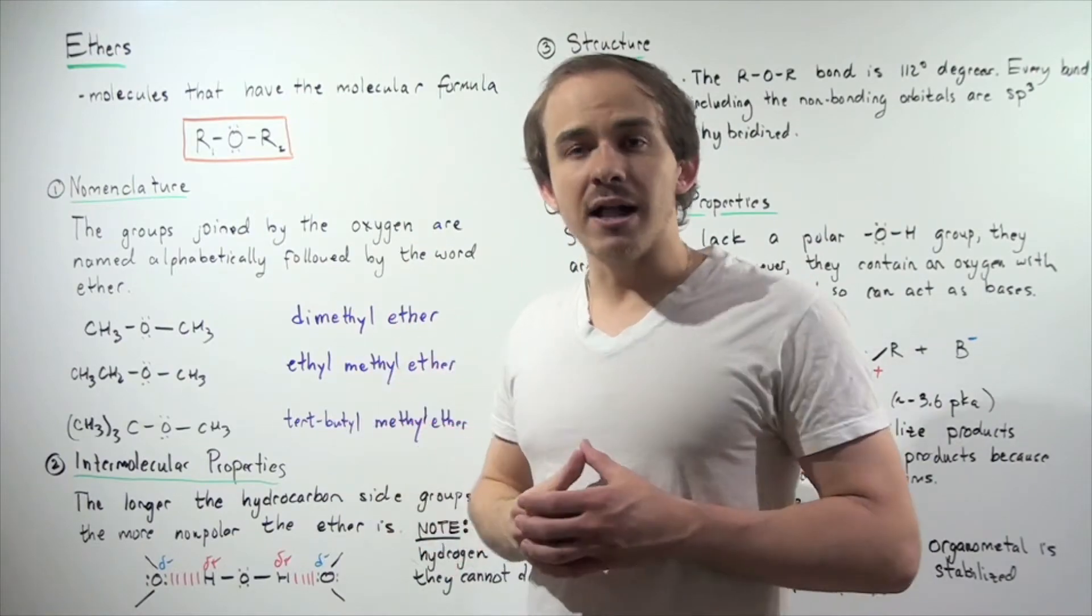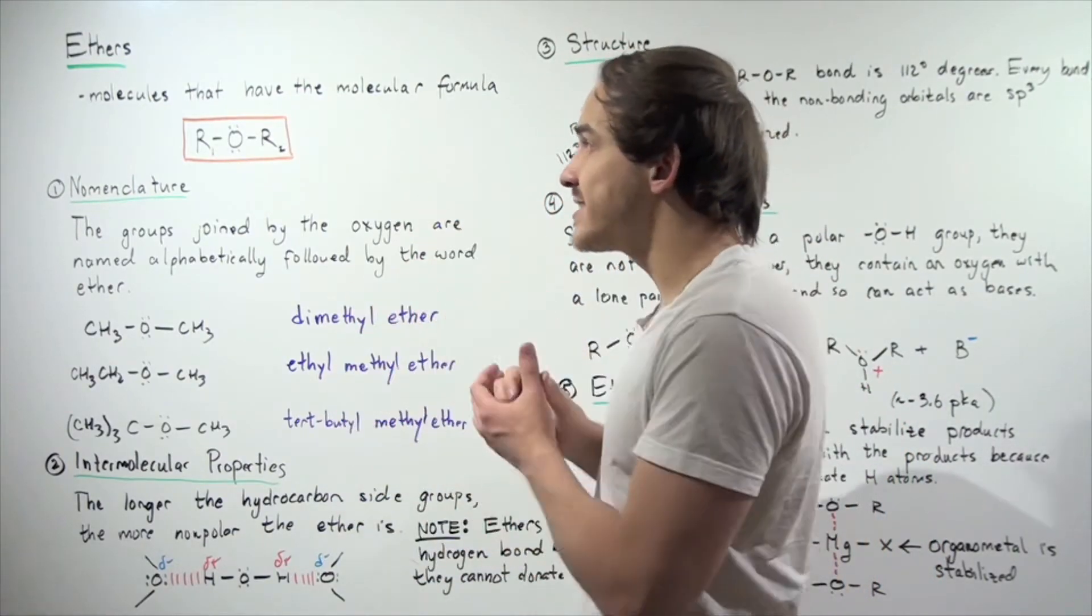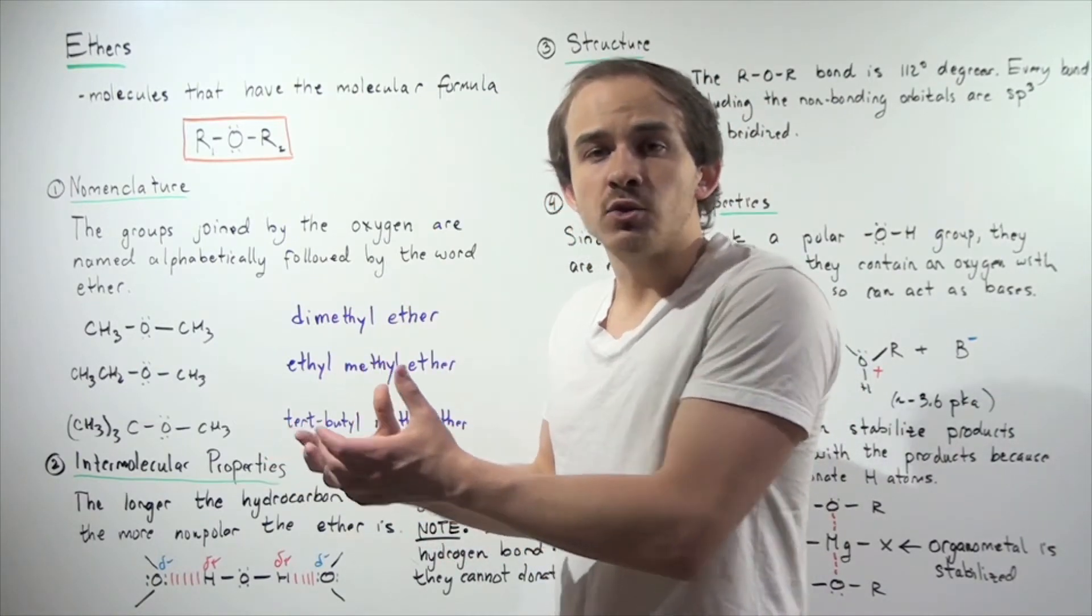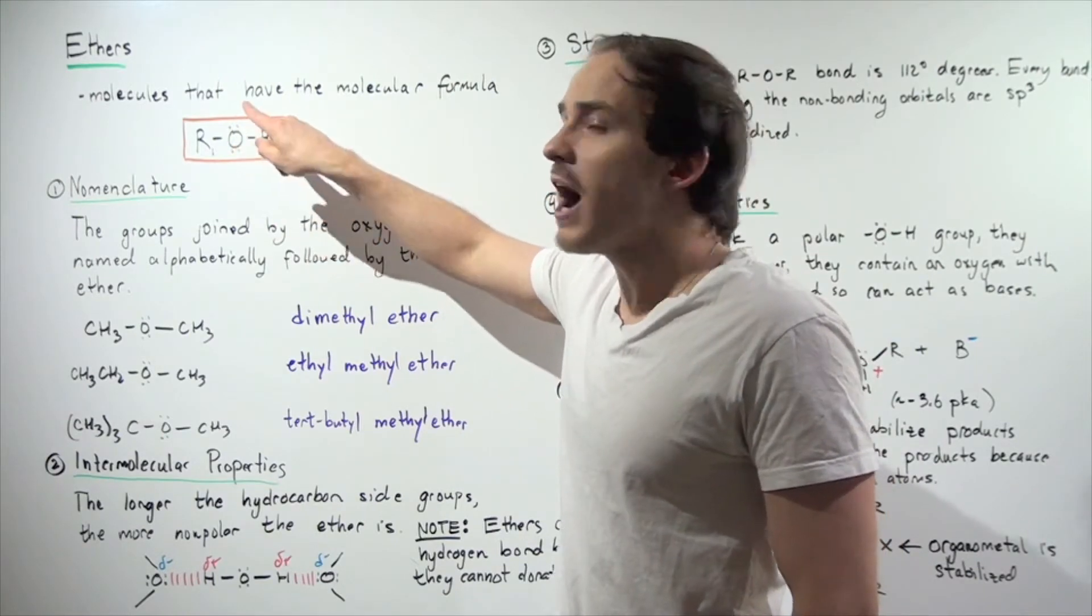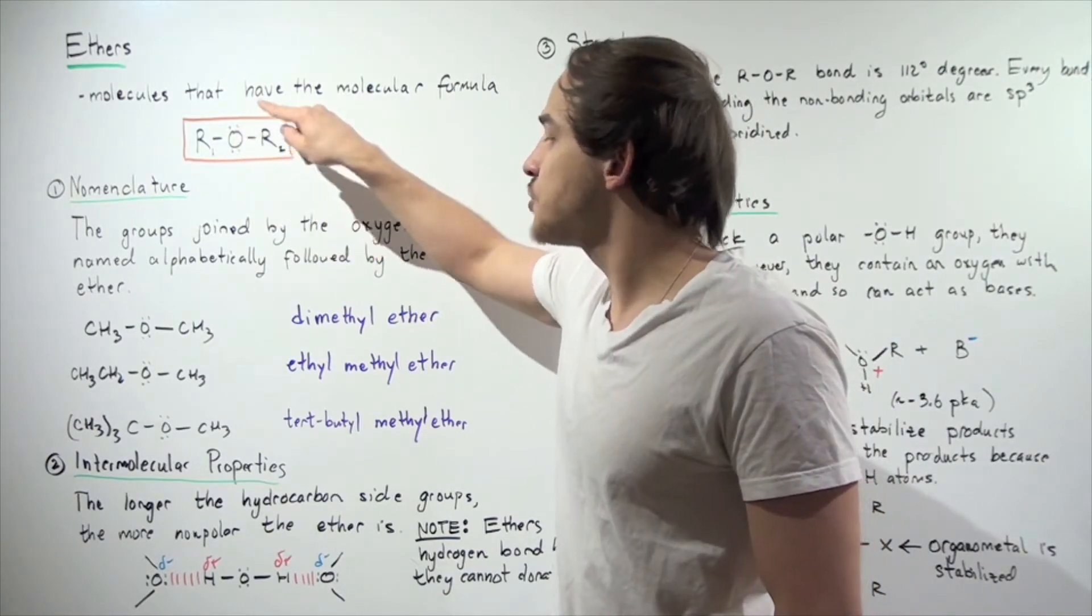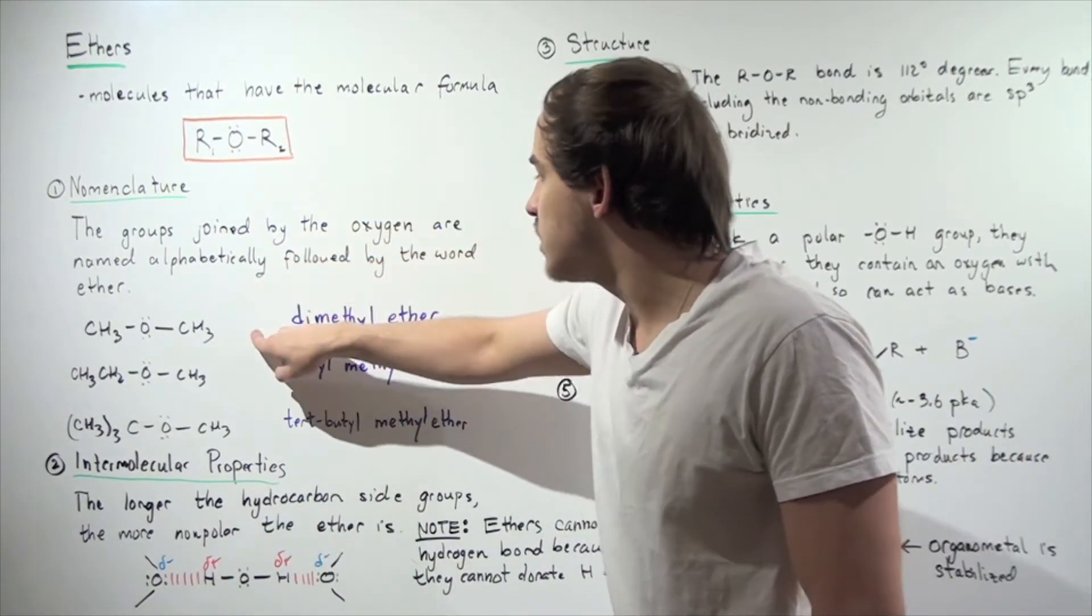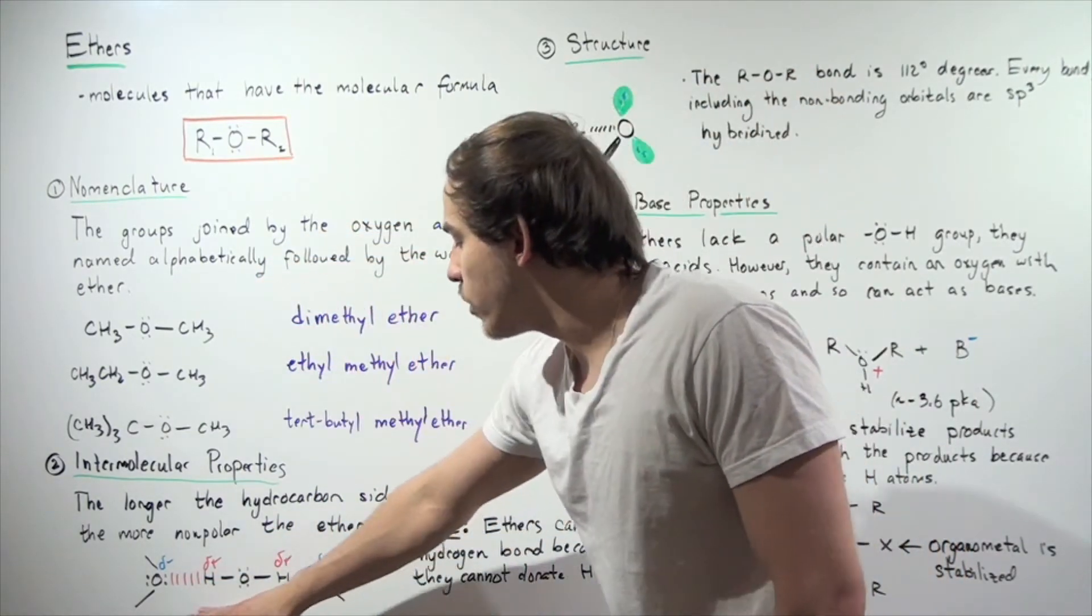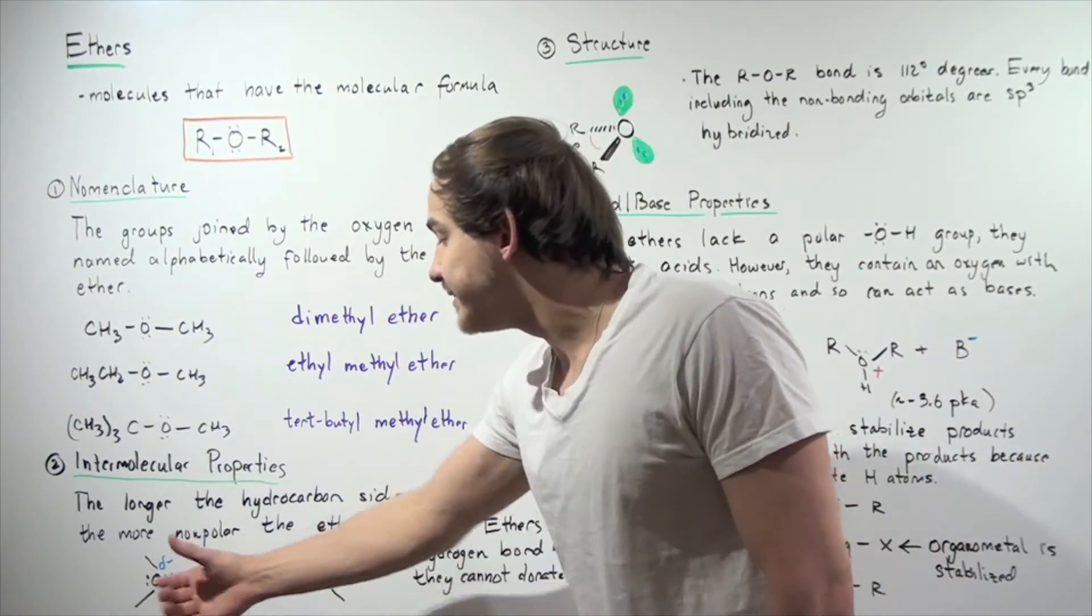But if a second molecule, like water, is present in close proximity, that water molecule can donate an H atom because the ether has an electronegative oxygen with a partial negative charge. Let's suppose we take dimethyl ether and mix it with water. We get the following reaction or bonding.